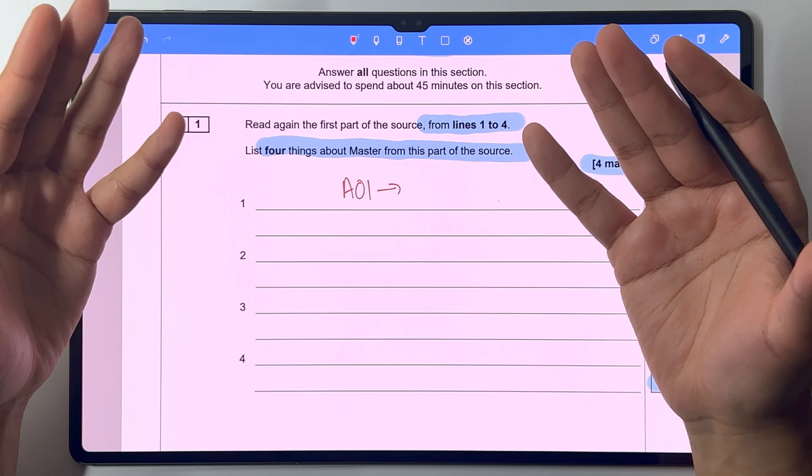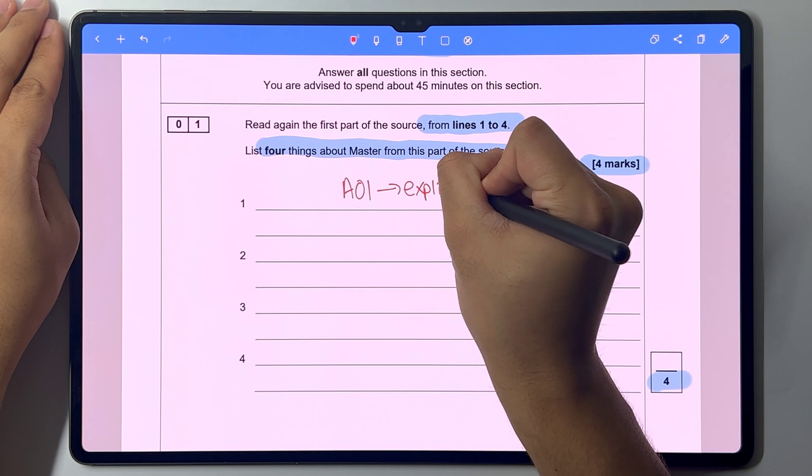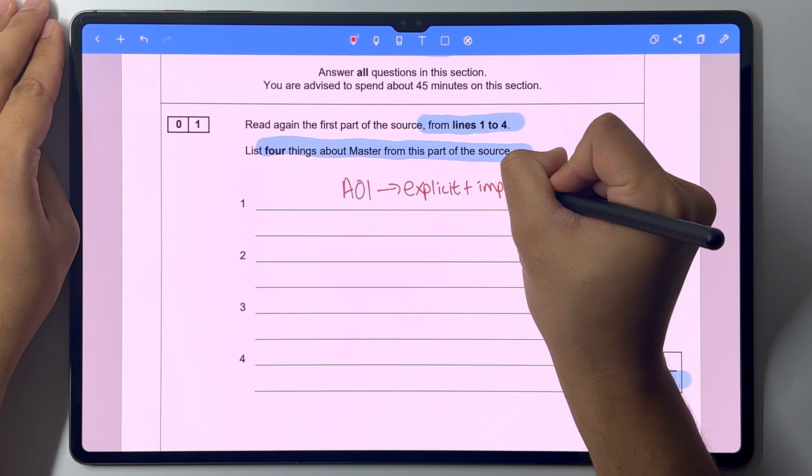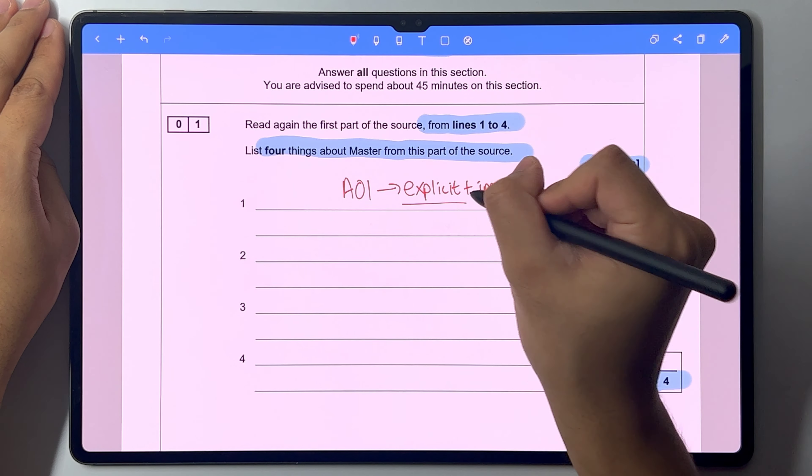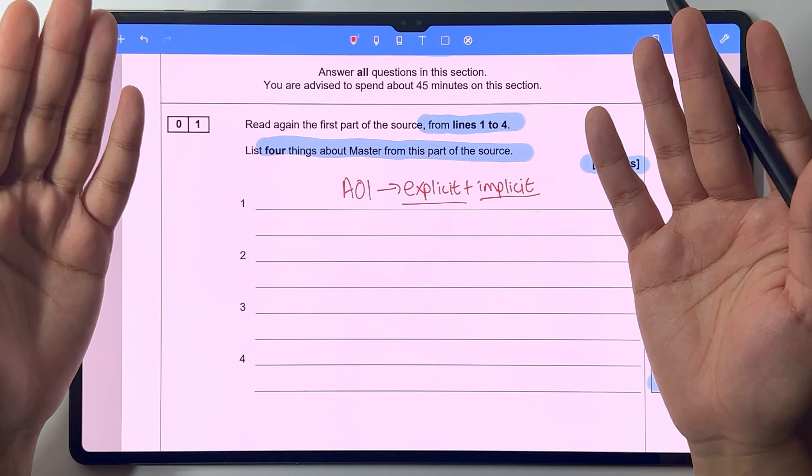It's the ability to extract explicit and implicit information. So explicit is the obvious information and implicit is the not so obvious information.